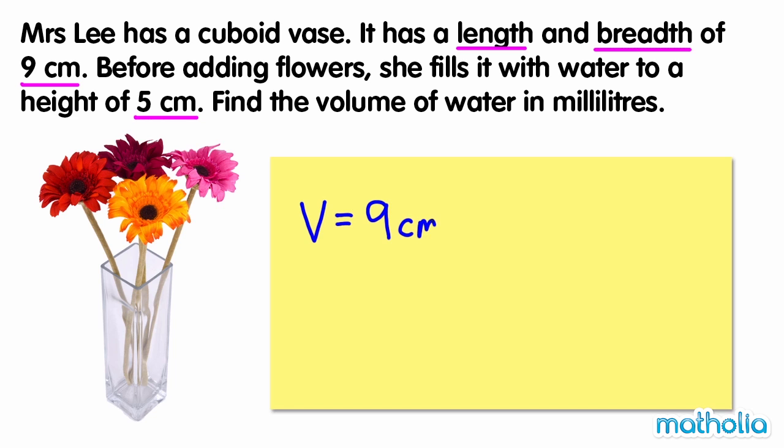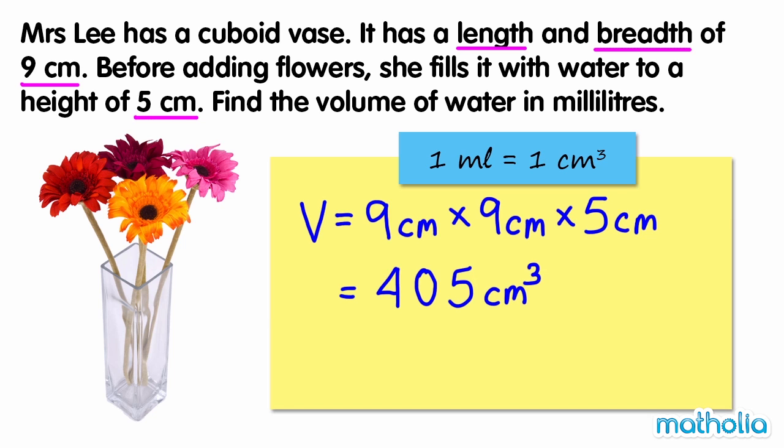To find the volume, we need to multiply the length by the breadth by the height. 9 times 9 times 5 equals 405. One milliliter equals one cubic centimeter. So the volume of water is 405 milliliters.